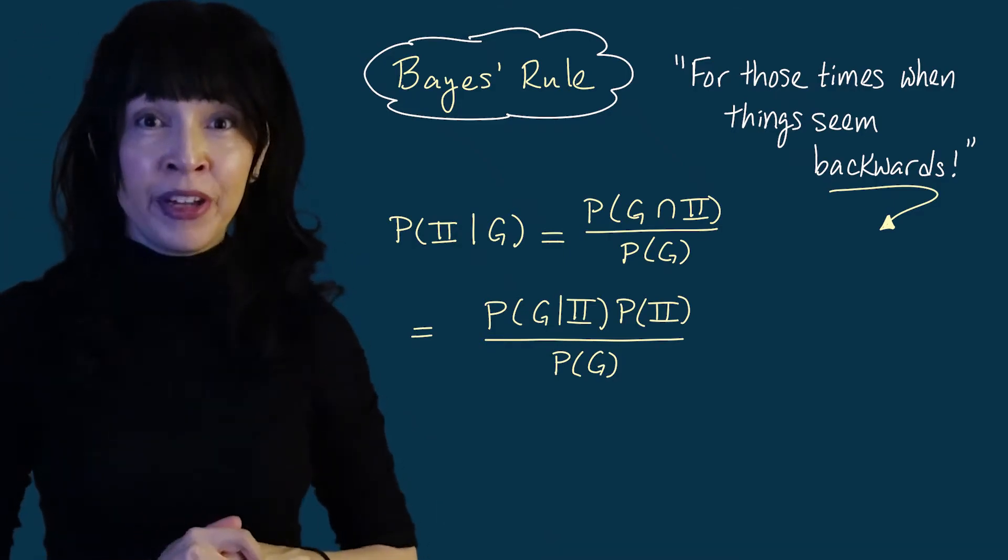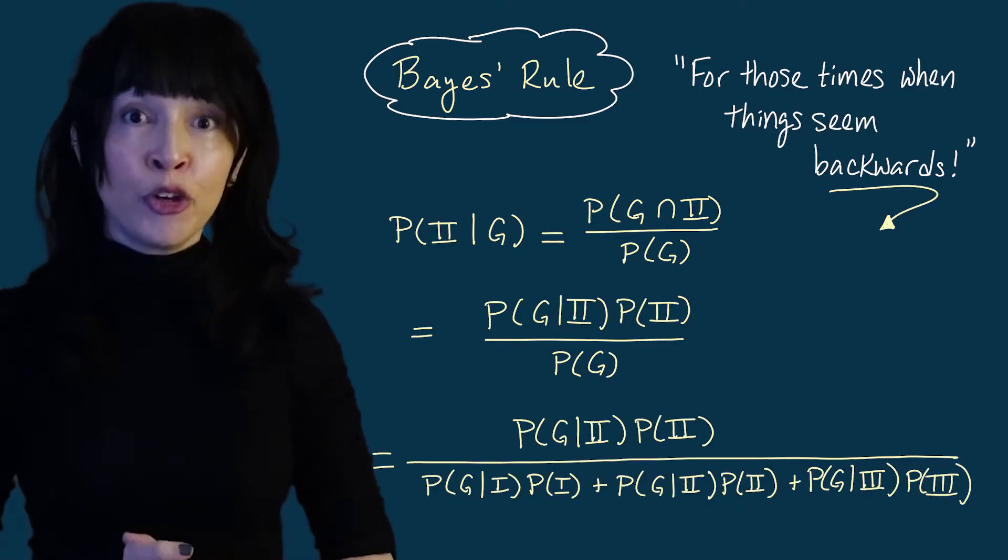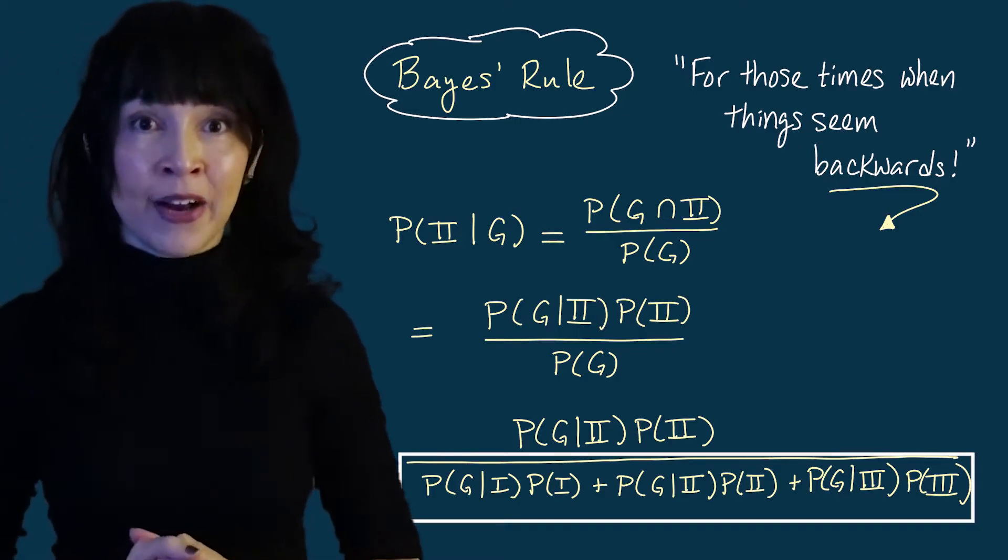In the denominator, the probability of getting a green ball. We already did this and we did it using the law of total probability by conditioning on which box it came out of. So we get all of these terms down here.